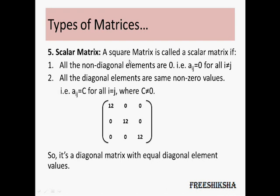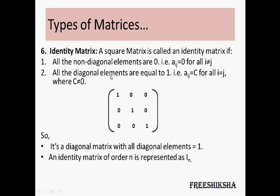Next is the scalar matrix. It's also a square matrix where the non-diagonal elements are equal to 0 and the diagonal elements all have the same constant value. For example, all elements of the leading diagonal are equal to 12 — they are equal to each other — and the elements apart from the leading diagonal are equal to 0. Such a matrix is called a scalar matrix.